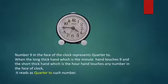Number 9 on the face of the clock represents quarter to. So, when the long, thick hand — which is the minute hand — touches nine, and the short, thick hand — which is the hour hand — touches any number on the face of the clock, it reads as quarter to such number.